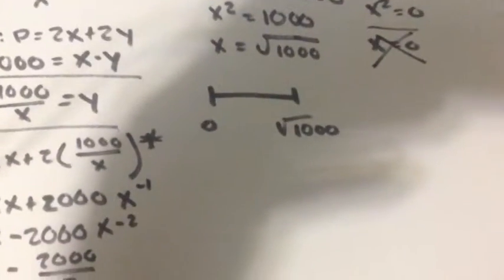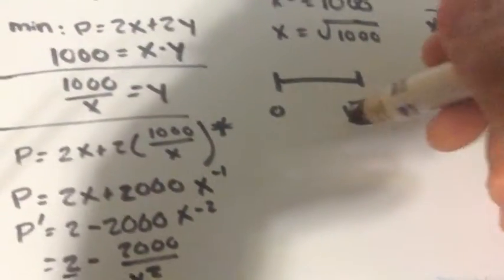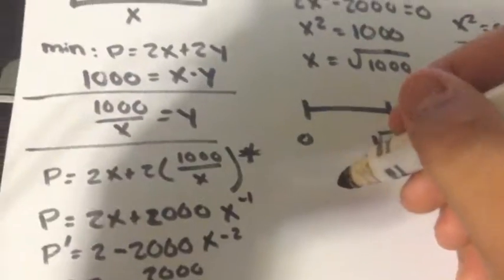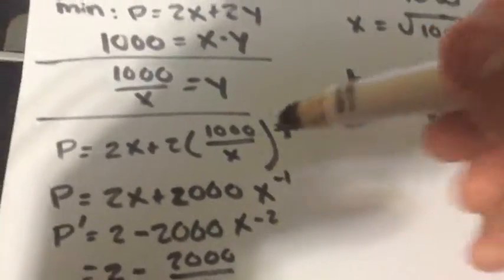To check, you can use the sign diagram. So you put the square root of 1000. X has to be at least 0. So you plug it back into this equation.